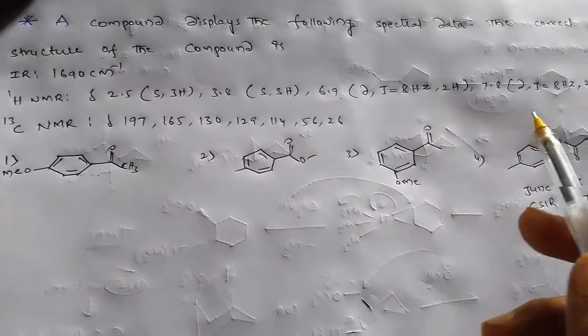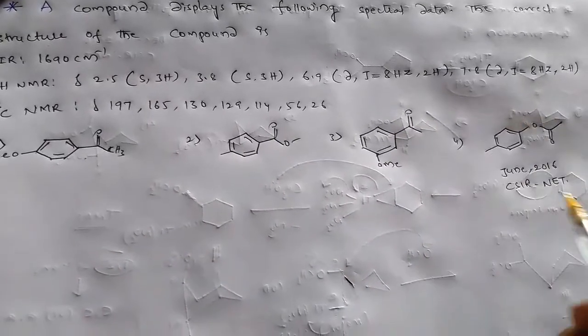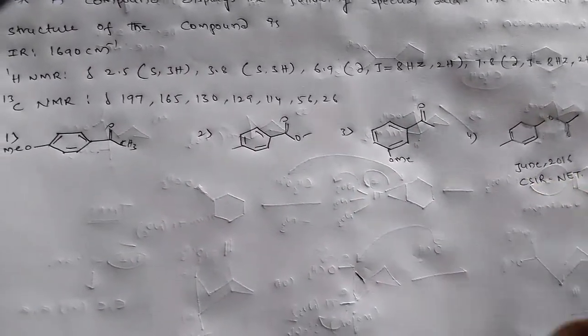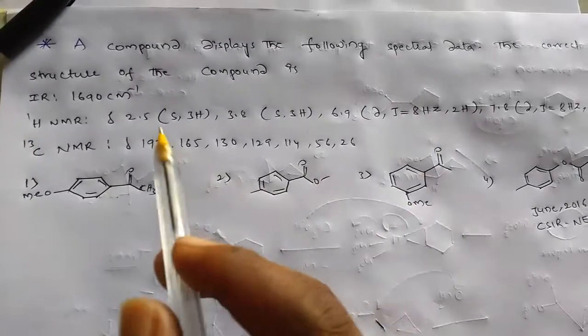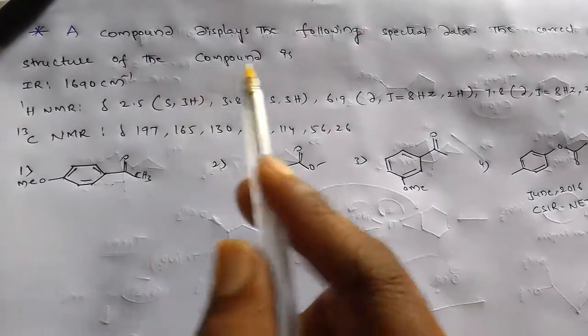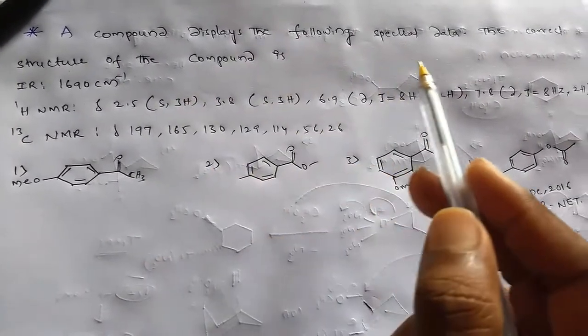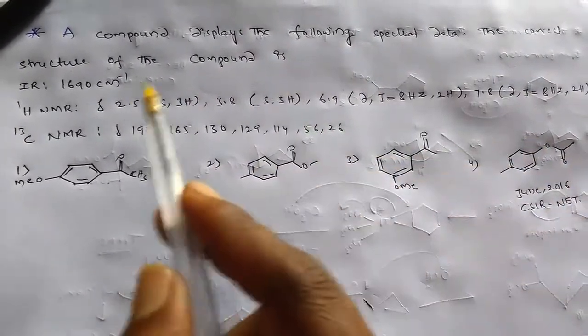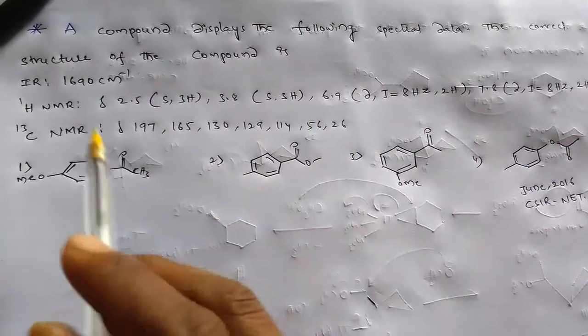Hi, this is Chiranjeevi. This question appeared in June 2016 CSIR-NET. The question is: a compound displays the following spectral data. The correct structure of the compound is?